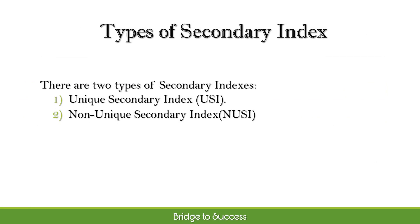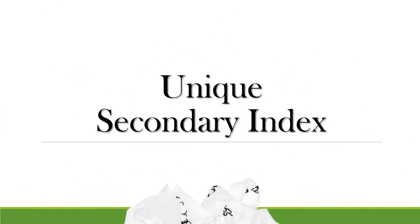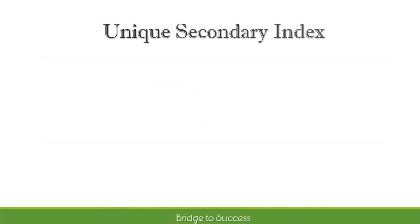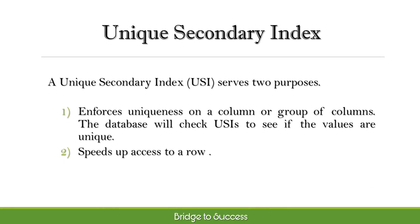There are two types of secondary indexes: unique secondary index and non-unique secondary index. A unique secondary index serves two purposes: it enforces uniqueness on a column or group of columns — the database will check USI to see if the values are unique — and it speeds up access to a row.